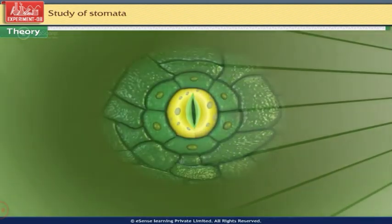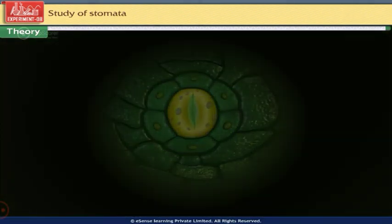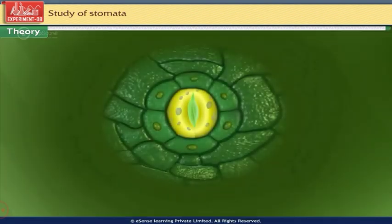Stomata get widely opened after exposing to sunlight and are found to be closed in darkness. Stomata regulate the exchange of gases and water vapor between the atmosphere and leaves.